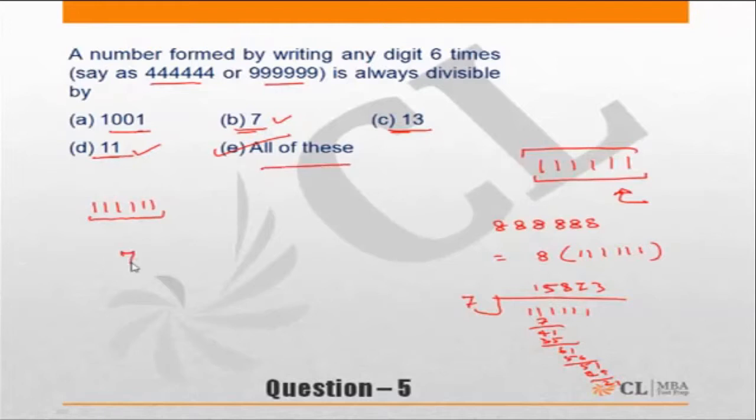Also, what I would want you to remember is this relation: 7 × 11 × 13 is equal to 1001. Please remember that this is an extremely important number - 7 × 11 × 13, three prime numbers, the product is 1001.